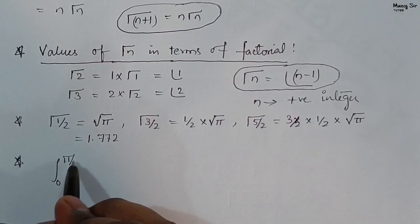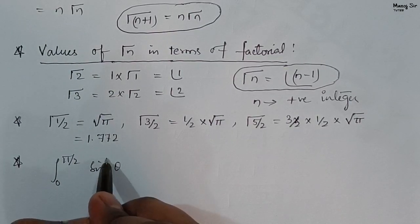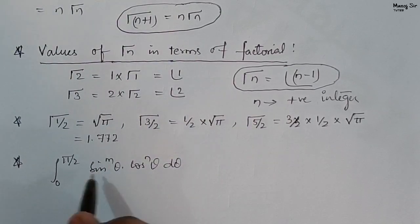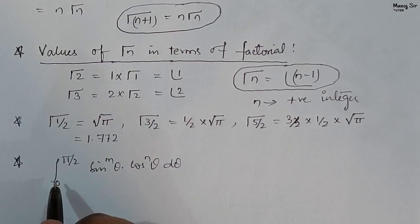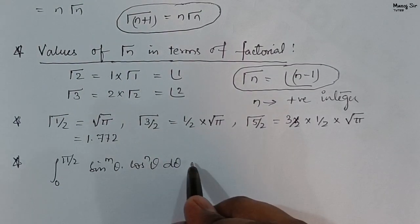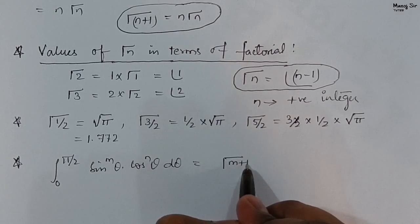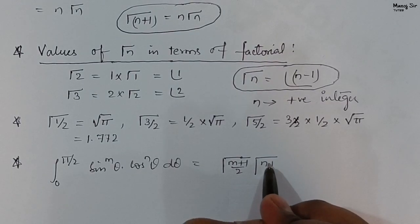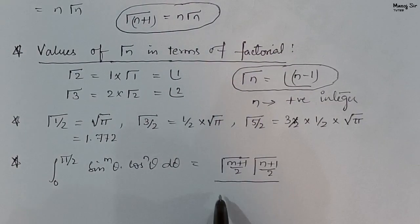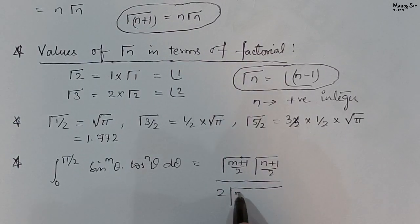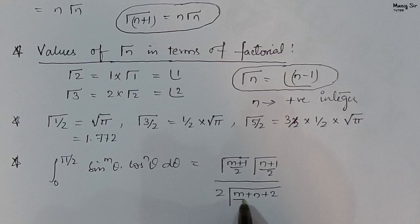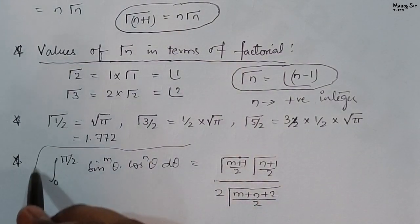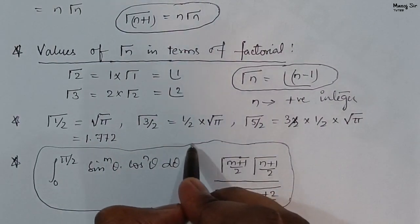There is a standard result we will use while solving problems on the gamma function. The integration from 0 to pi/2 of sin theta to the power m, times cos theta to the power n, d theta equals Gamma of (m+1)/2 times Gamma of (n+1)/2, all divided by 2 times Gamma of (m+n+2)/2. We will use this formula directly whenever required.